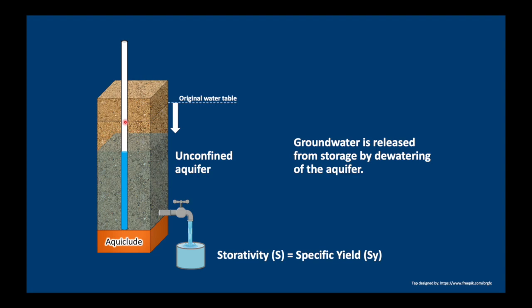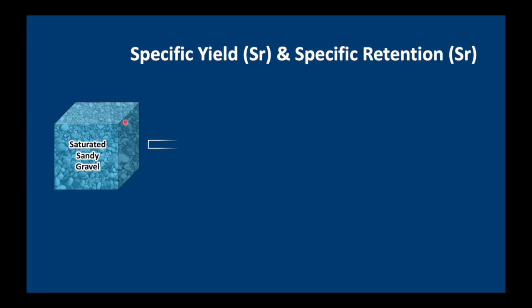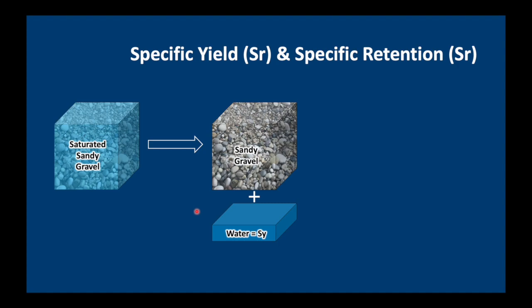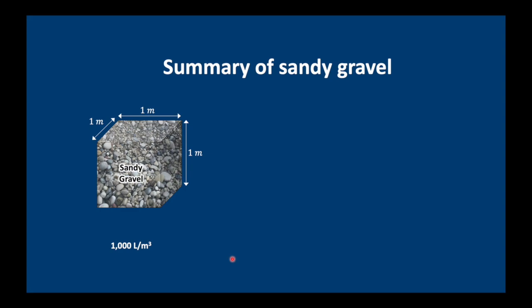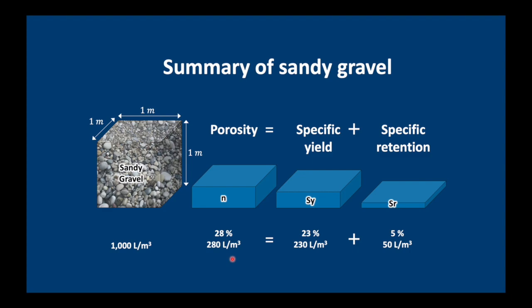The storativity of unconfined aquifers is the same as the specific yield. In a previous video, we saw how a certain amount of water can be abstracted from saturated sandy gravel by drainage, and it's called specific yield. Some also stays behind, which we call specific retention. We did an experiment which showed that a sample of sandy gravel had a porosity of 28%, a specific yield of 23%, and a specific retention of 5%.